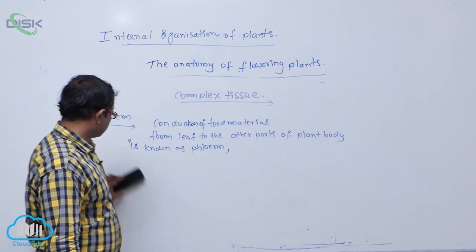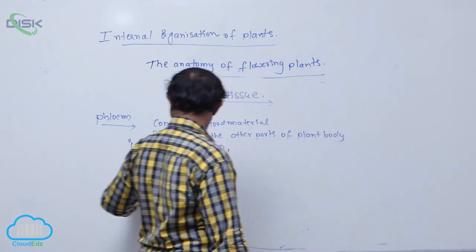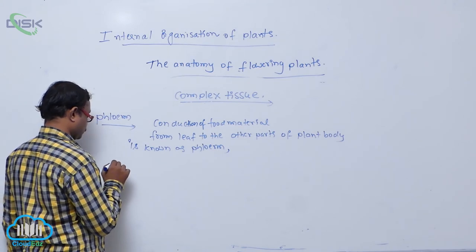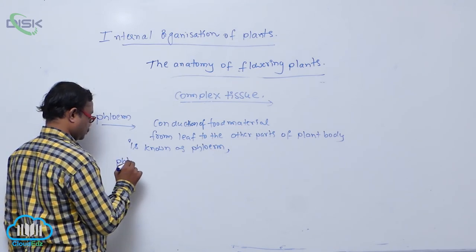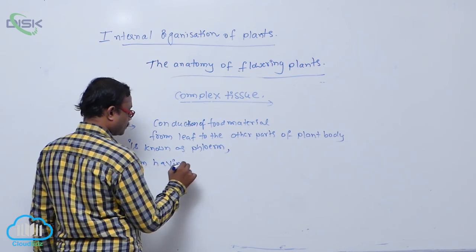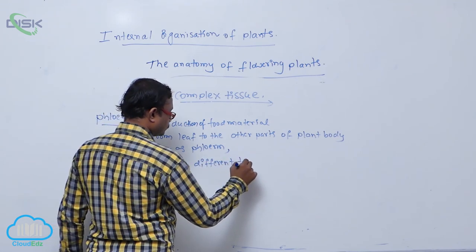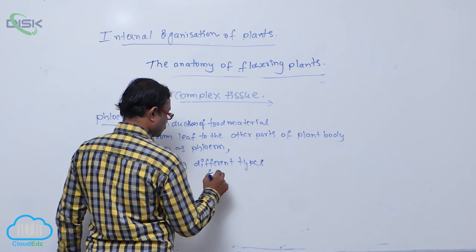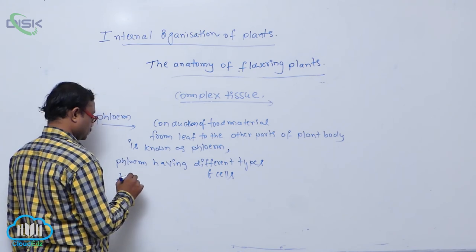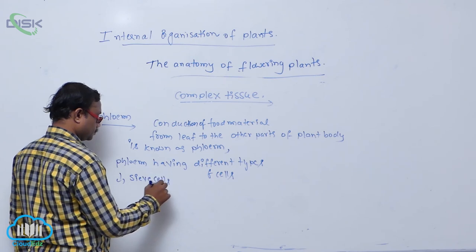That is known as the phloem part. In phloem generally having different types of cells. Different types of cells. First one is sieve cells.